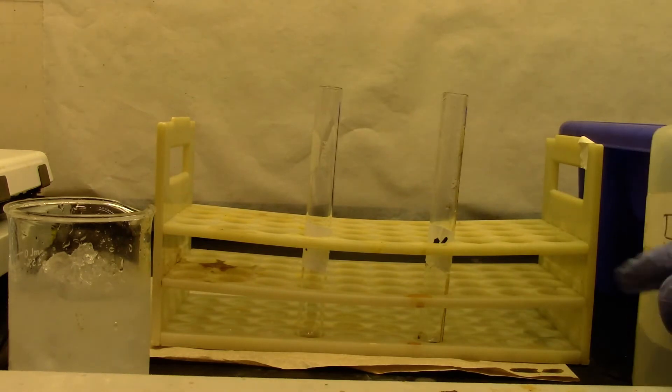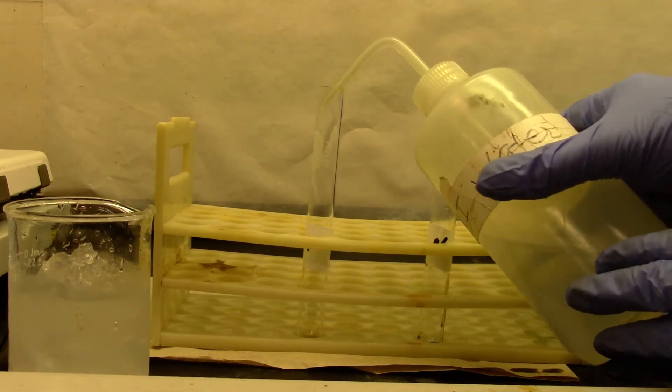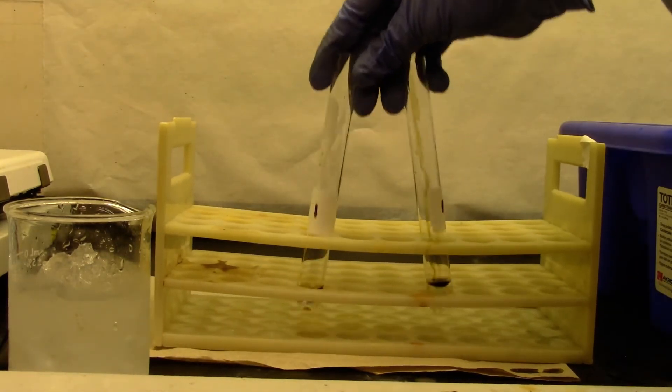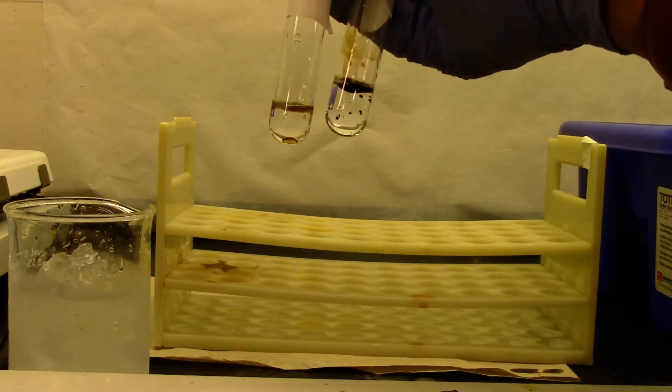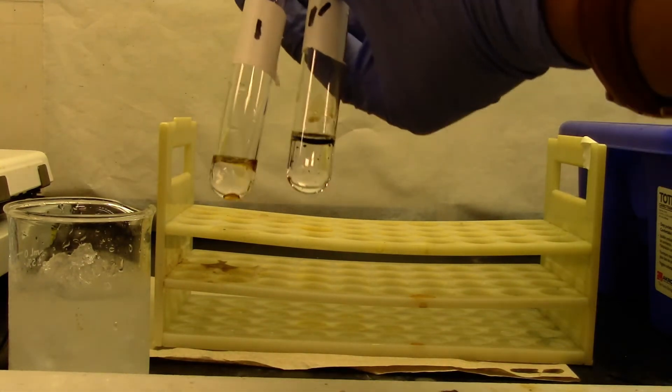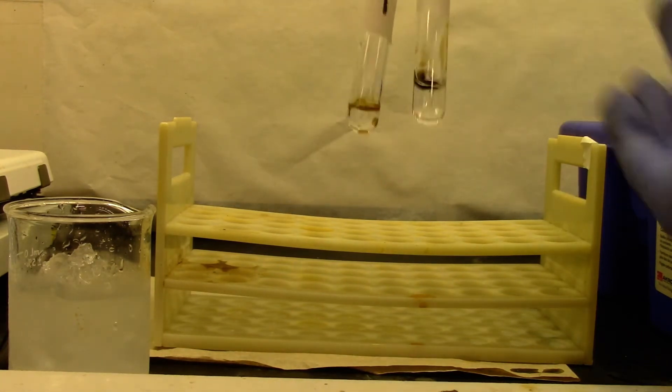We will approximately add 2 mL of DI water in each. If you can see, this is how they look like. It is an oily layer floating in water. I am going to add 8 drops of concentrated sulfuric acid in each of these samples.